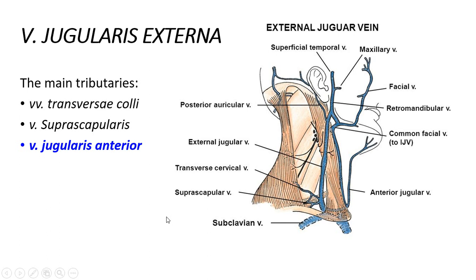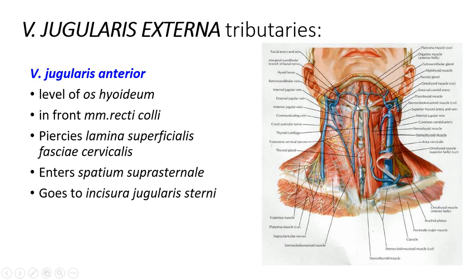The vena jugularis anterior starts approximately at the level of the os hyoideum from a venous plexus under the chin. On both the right and left side, this vein goes straight downward along the musculi recti colli — the straight muscles of the neck — one to two centimeters next to the midline of the neck.